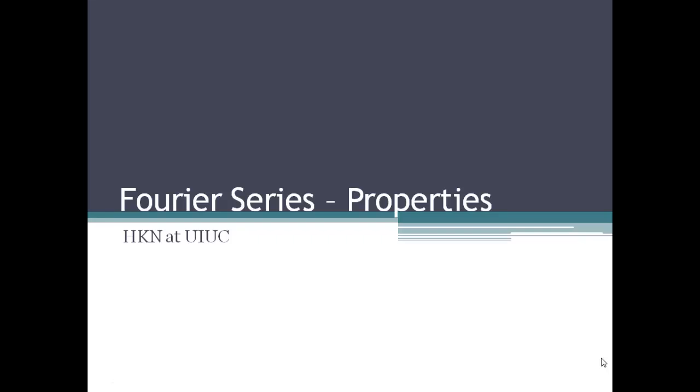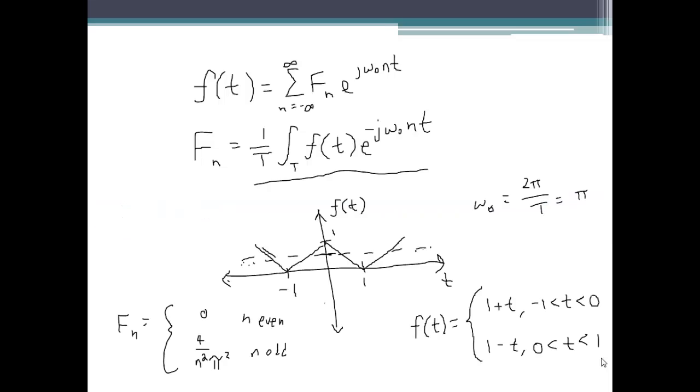In this video we're going to look at applying different properties for Fourier series. In our first video we looked at this triangle wave which had a period of 2 and we did all the work in the integration. We found out that it has Fourier coefficients of 0 for even multiples of n and coefficients of 4 over n squared pi squared for odd integers.